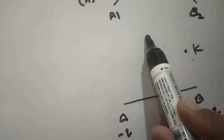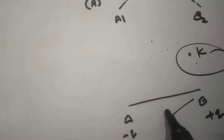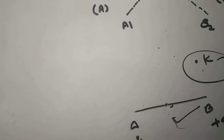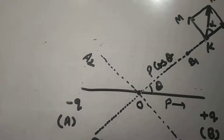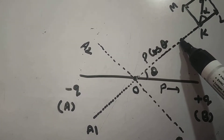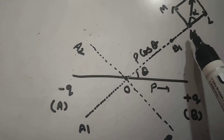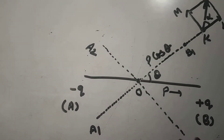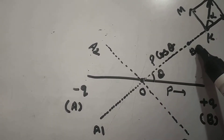To solve this problem, we use a method in which the dipole is resolved into two rectangular components. One component A1B1 is such that point K lies on the axial line of that dipole, and A2B2 is such that K lies on the equatorial line of that dipole.